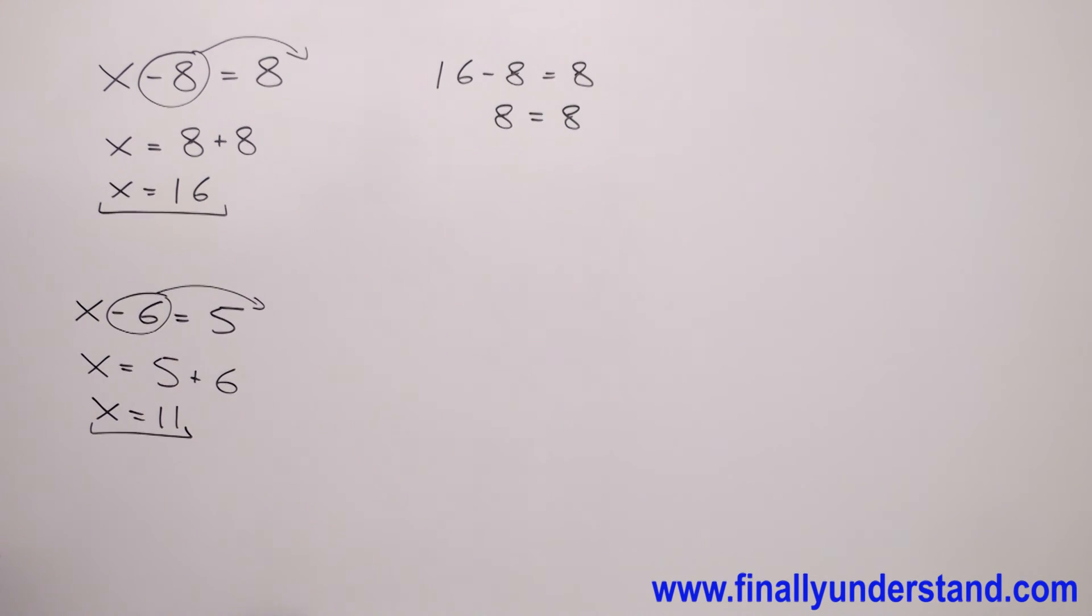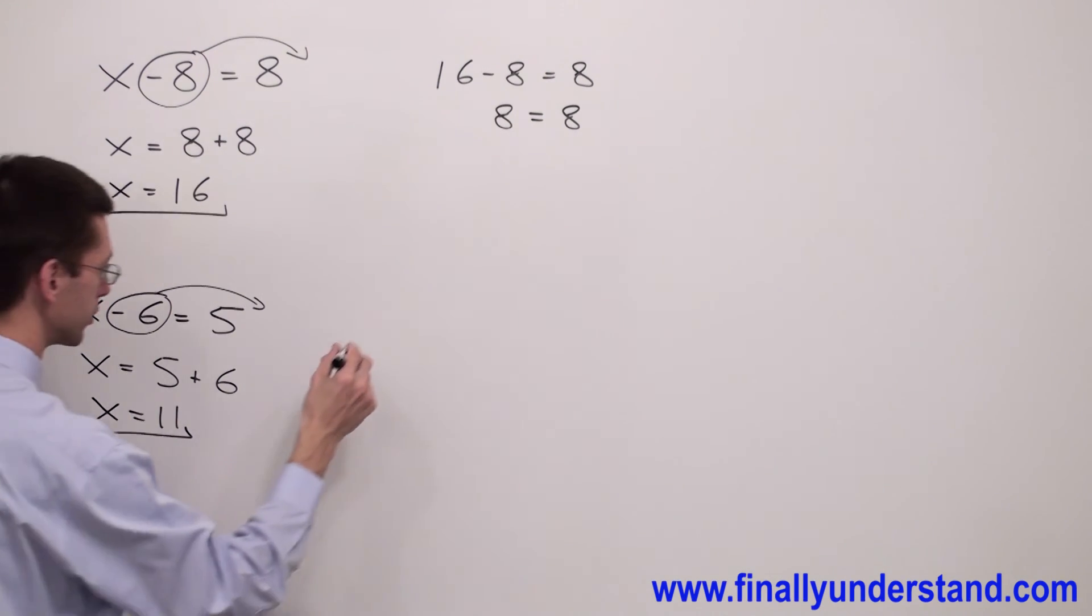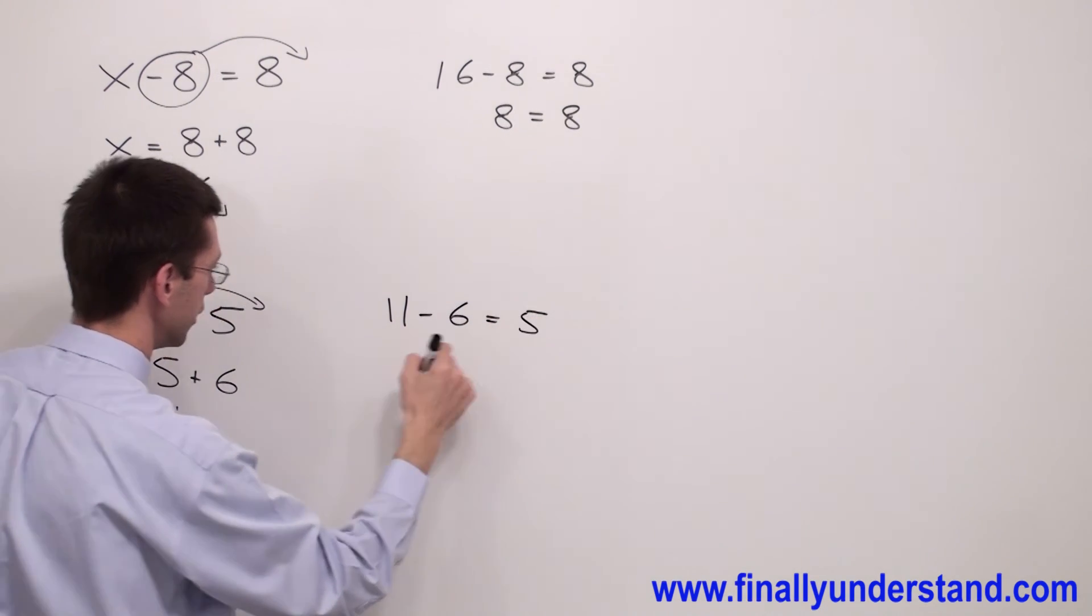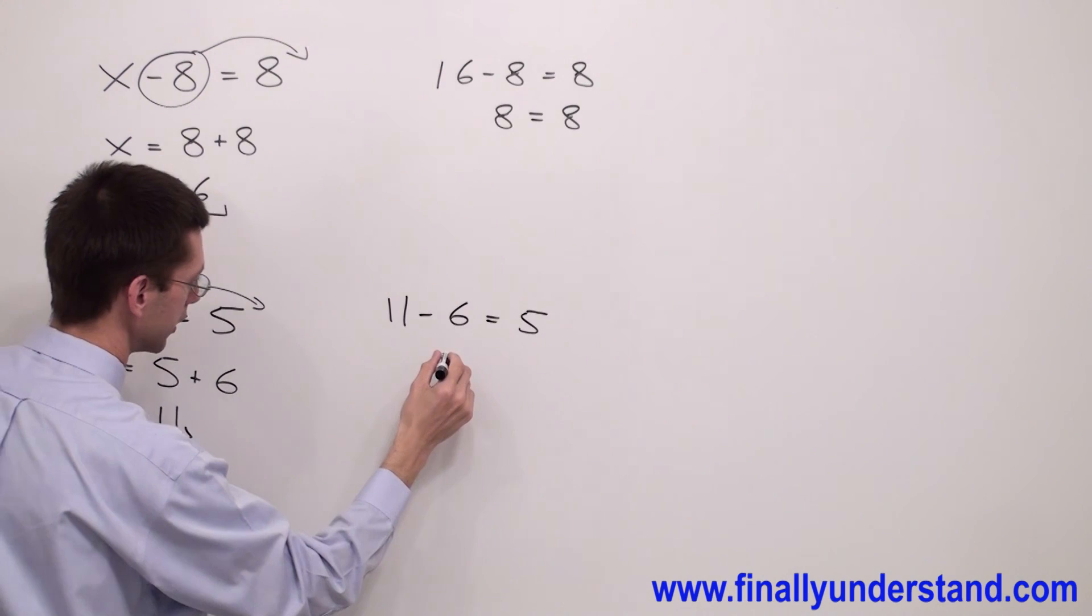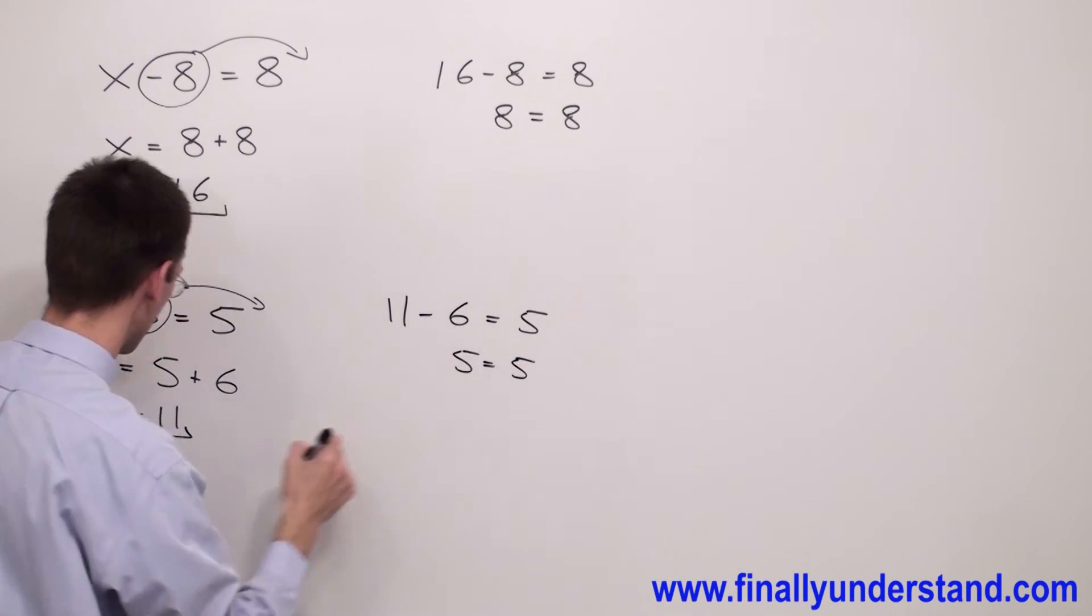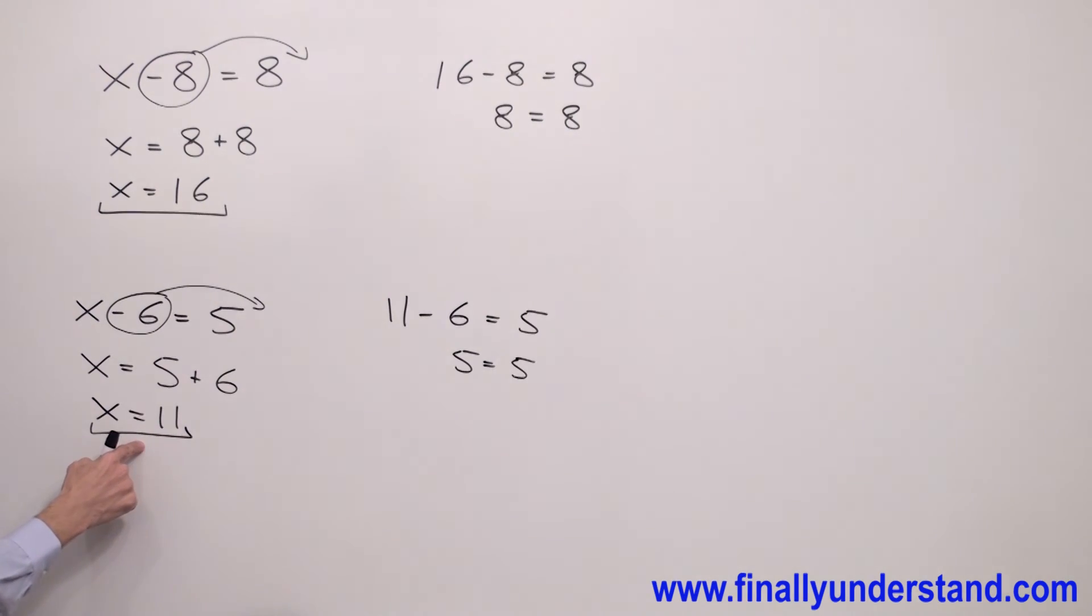Let's prove that this is correct. You have to replace this x by 11 in order to verify if the answer is correct. Simply write 11 minus 6 equals 5. 11 minus 6 is 5. 5 equals 5. That's why this is the solution to my problem.